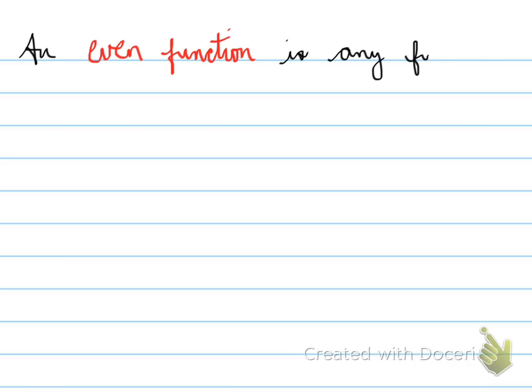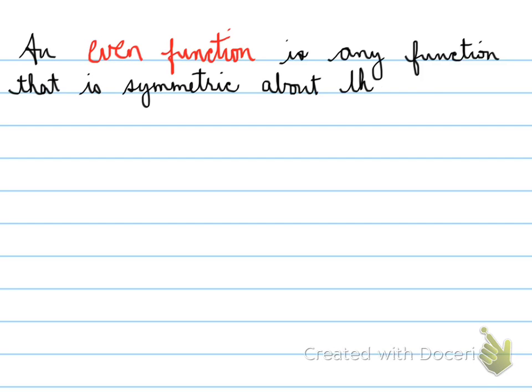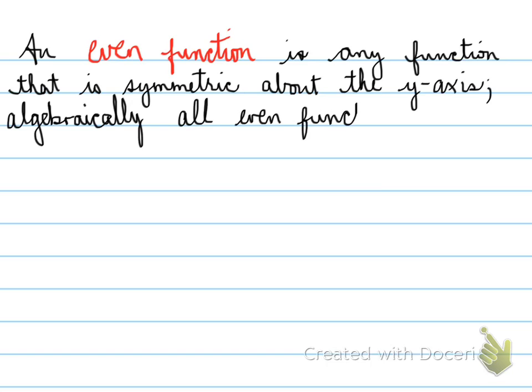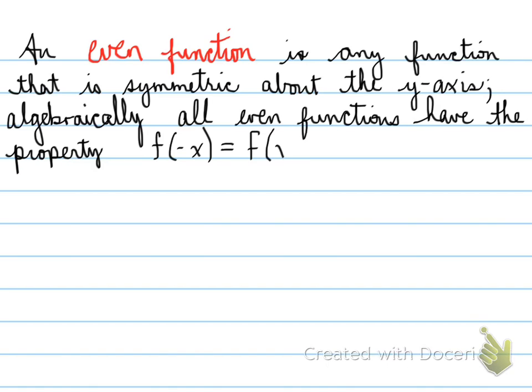An even function is any function that is symmetric about the y-axis. Algebraically, all even functions have the property that f at negative x is equal to f at x. What that means is that I can take a particular graph, reflect it horizontally, and that will give me the original function again.